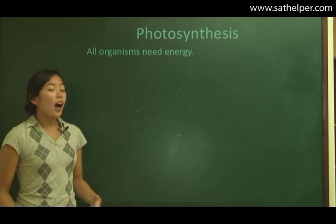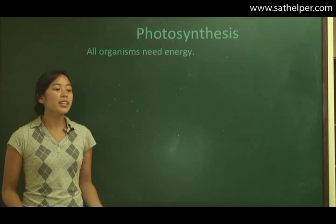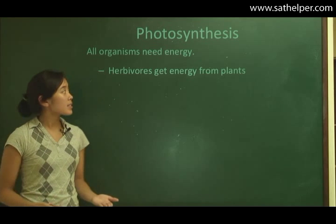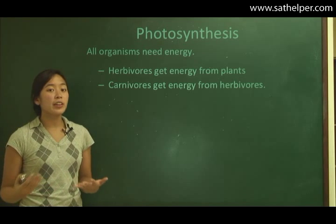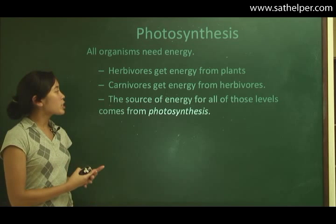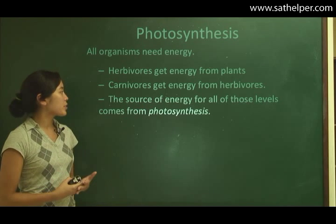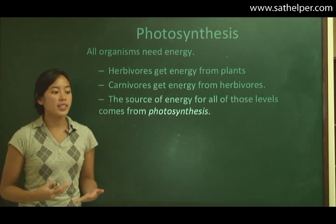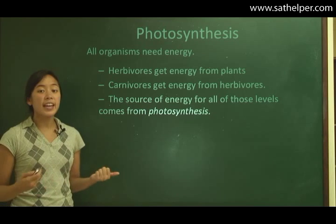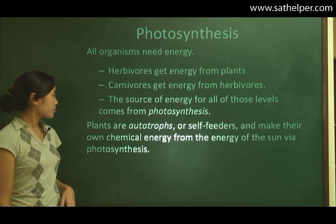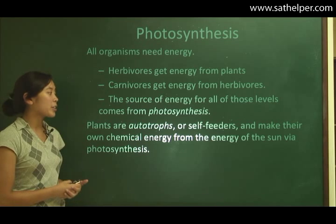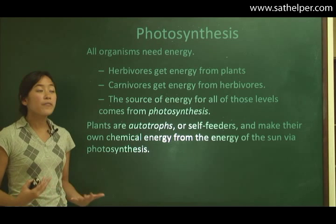Photosynthesis. All organisms need energy — this much is obvious. Herbivores get their energy from plants. Carnivores get their energy from herbivores or other carnivores. So the source of energy for all of those levels comes from photosynthesis, because plants use photosynthesis to get energy from the sun. Plants are autotrophs — self-feeders — and make their own chemical energy from the energy of the sun via photosynthesis.